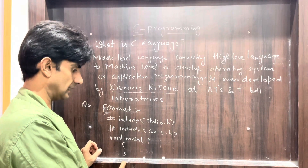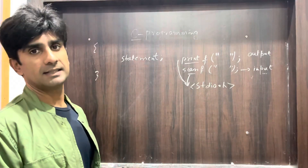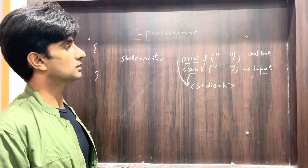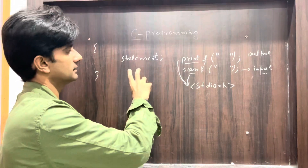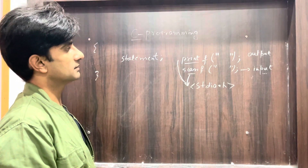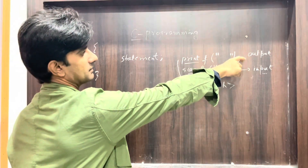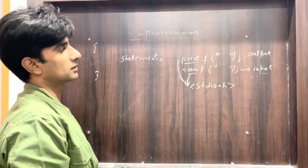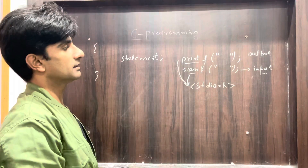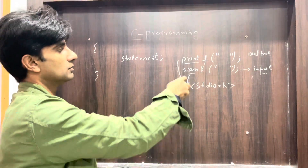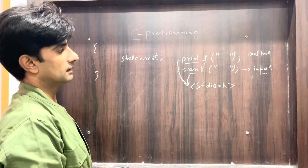Inside the brackets we write the statements which we want our compiler to execute. We will use two functions: printf with brackets and a semicolon — we use this to get the output of the program — and scanf, which we use to get the input.